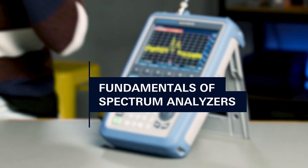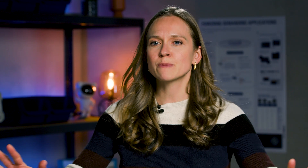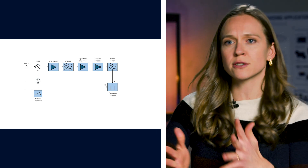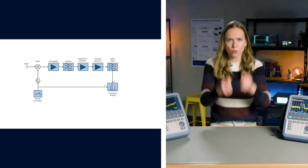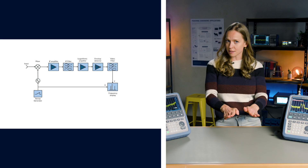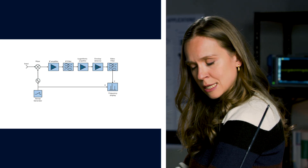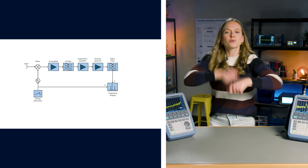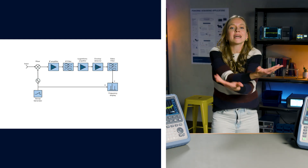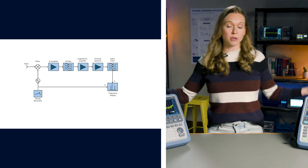So how does it work? A spectrum analyzer captures a signal, uses the superheterodyne principle to convert it to a lower frequency for easier analysis, filters it to isolate specific frequency components, detects amplitude, and processes the data to provide a visual representation of the frequency spectrum. This allows engineers and technicians to analyze and troubleshoot signals in various applications.